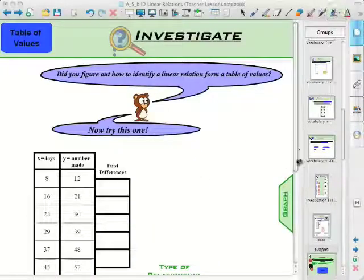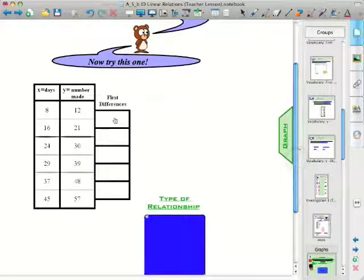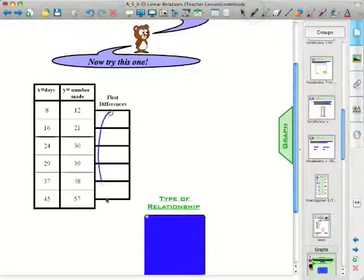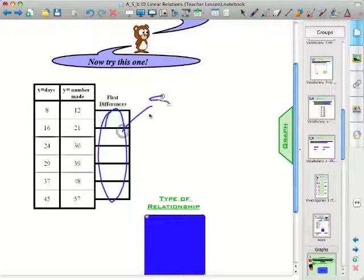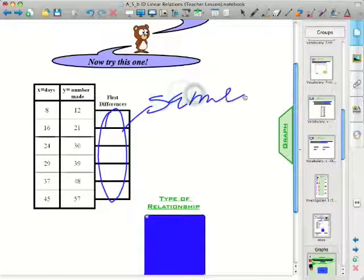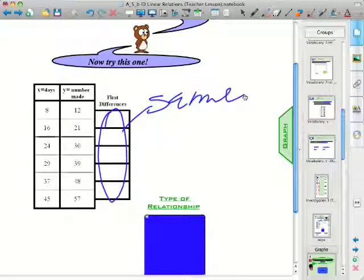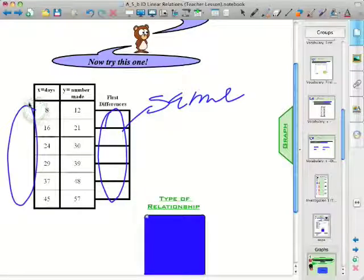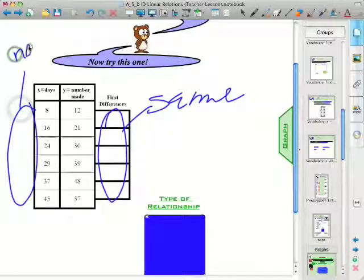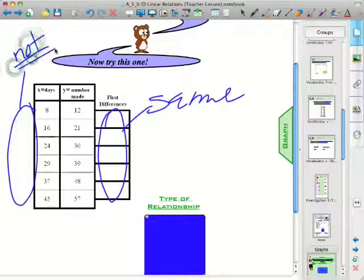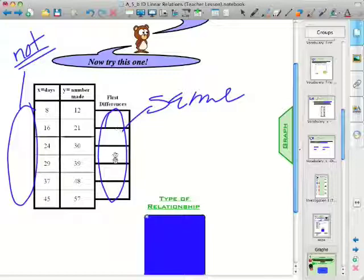And what's interesting about this example is most students would go ahead and calculate the first differences, and they'll notice that these first differences are all the same. But what I've noticed over the years is that most students always forget to calculate the x differences, in which case these x differences are not the same. And so students would automatically, the majority of students would agree that this relationship is linear.